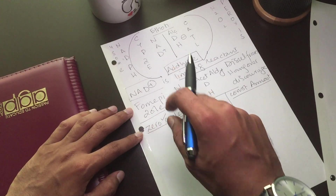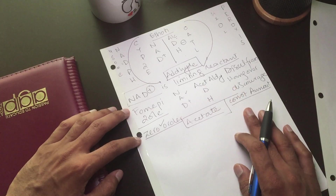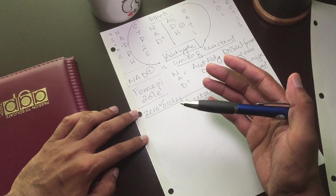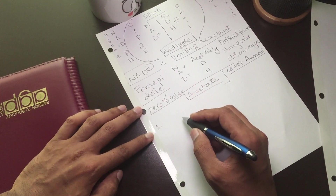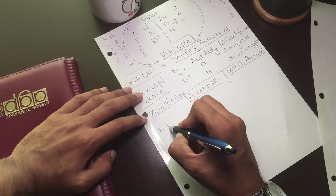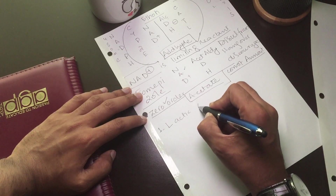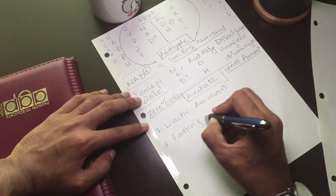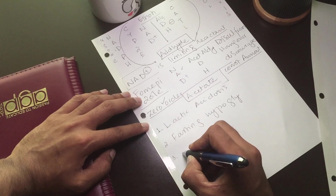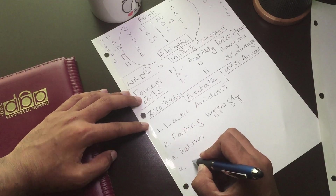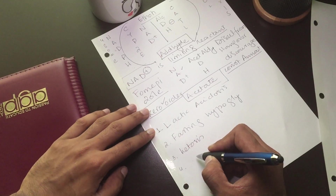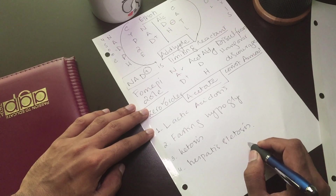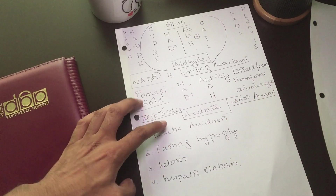Now, how does alcohol cause four important symptoms? First, alcohol causes lactic acidosis. Second, alcohol causes fasting hypoglycemia. Third, it causes ketosis. Fourth, it causes hepatic steatosis. These are the four important symptoms which alcohol causes in the body.